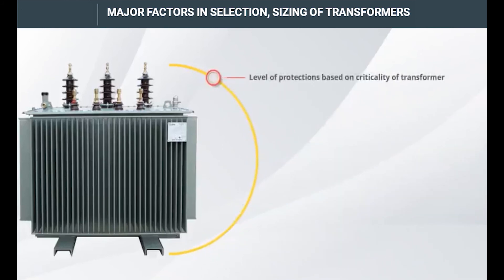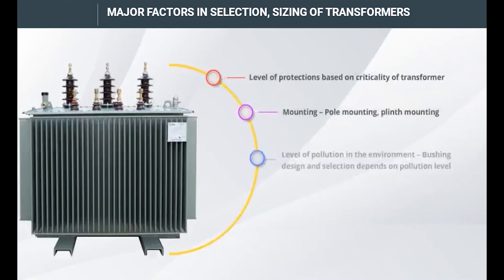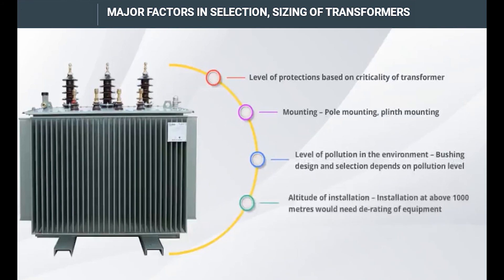The level of protection required depends on the criticality of the transformer. Mounting options include pole mounting and plinth mounting. The level of pollution in the environment affects bushing design and selection. Finally, the altitude of installation matters — installations above 1000 meters require derating of equipment.